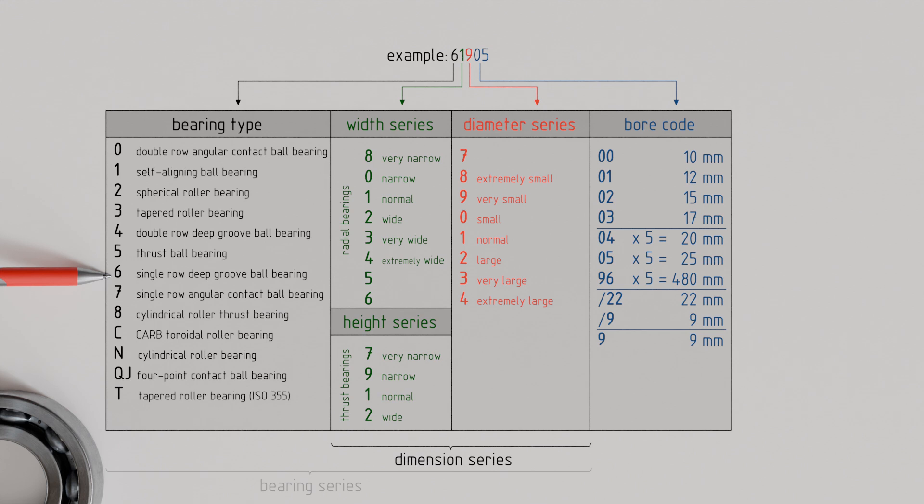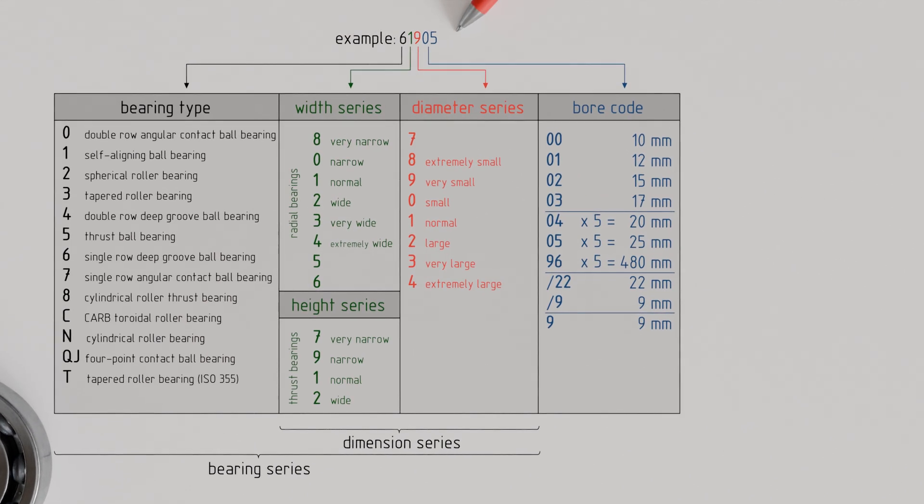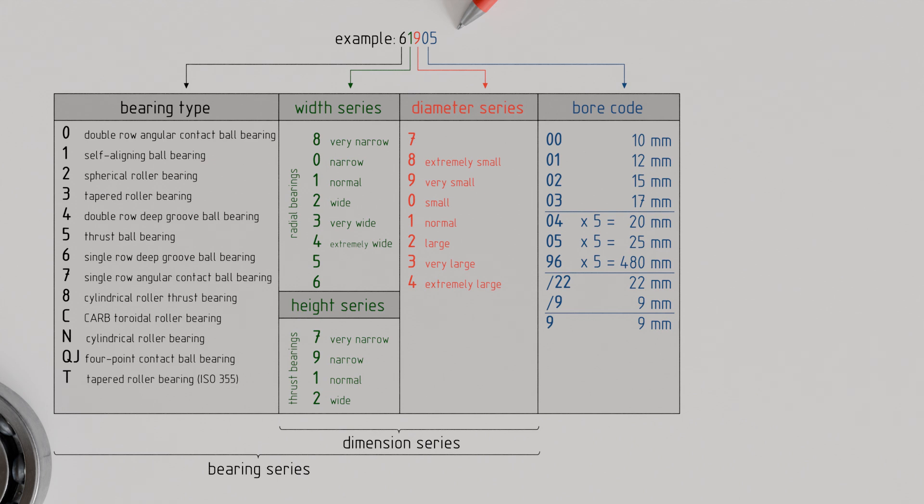The combination of bearing type and dimension series is also referred to as the bearing series. With the knowledge of the bearing series and bore code, a rolling bearing is clearly described in terms of design and main dimensions.